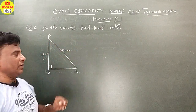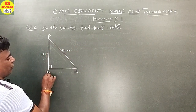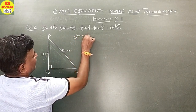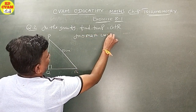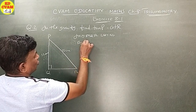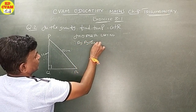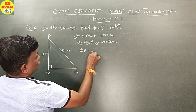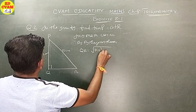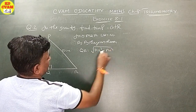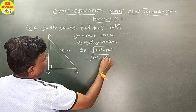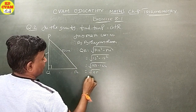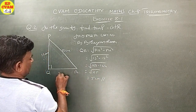In the given figure, find tan P minus cot R. Angle Q is equal to 90. By Pythagoras theorem, QR is equal to square root of PR square minus PQ square. That is, square root of 13 squared minus 12 squared, which is square root of 169 minus 144, equals square root of 25, which equals 5 centimeter.